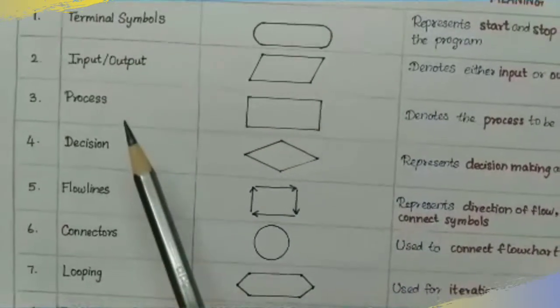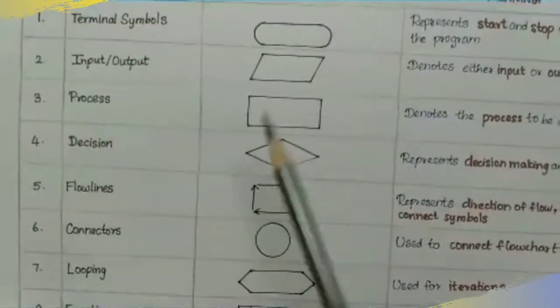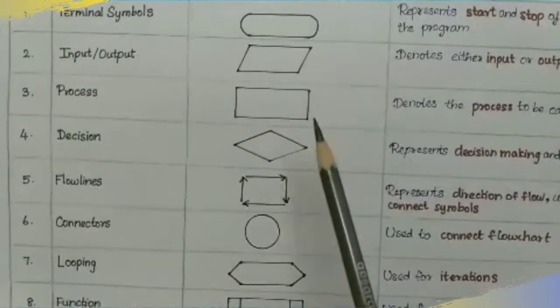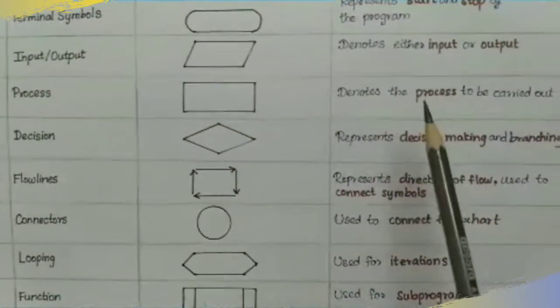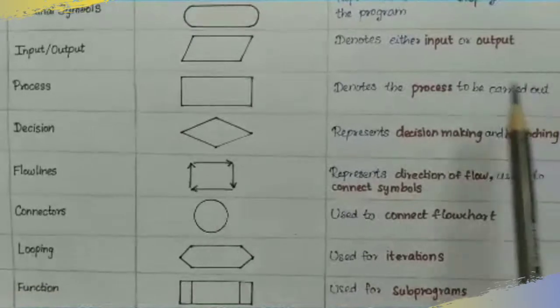The next symbol is the process symbol. The process symbol is a rectangular-shaped symbol. This is used to represent a process.